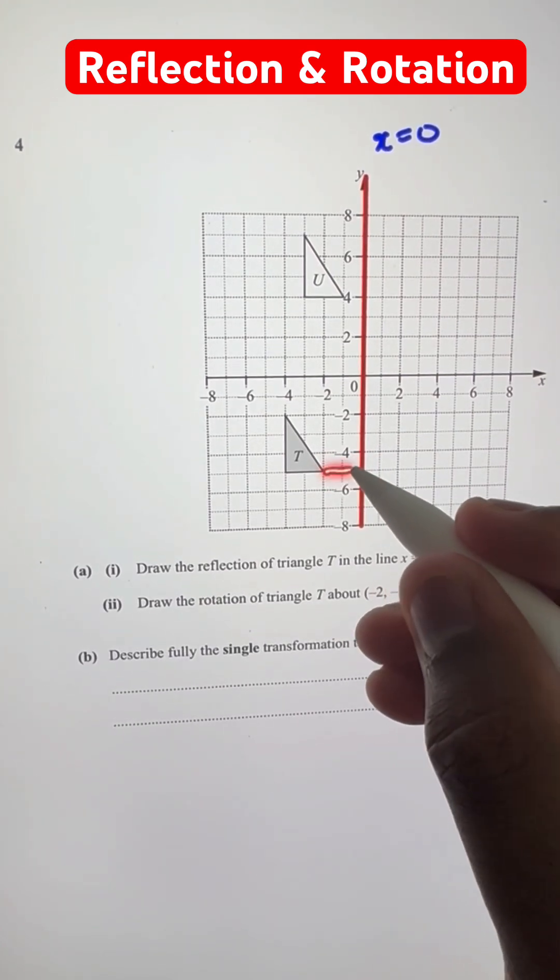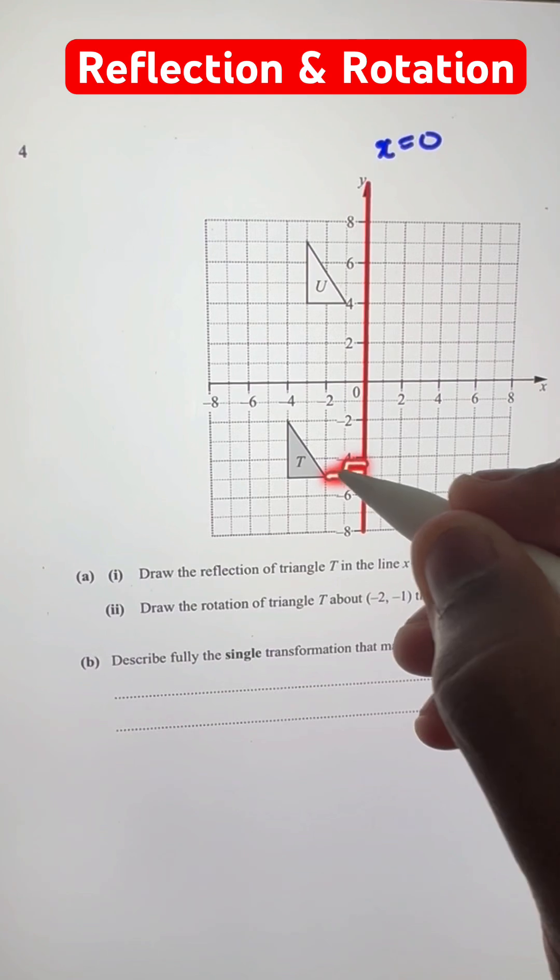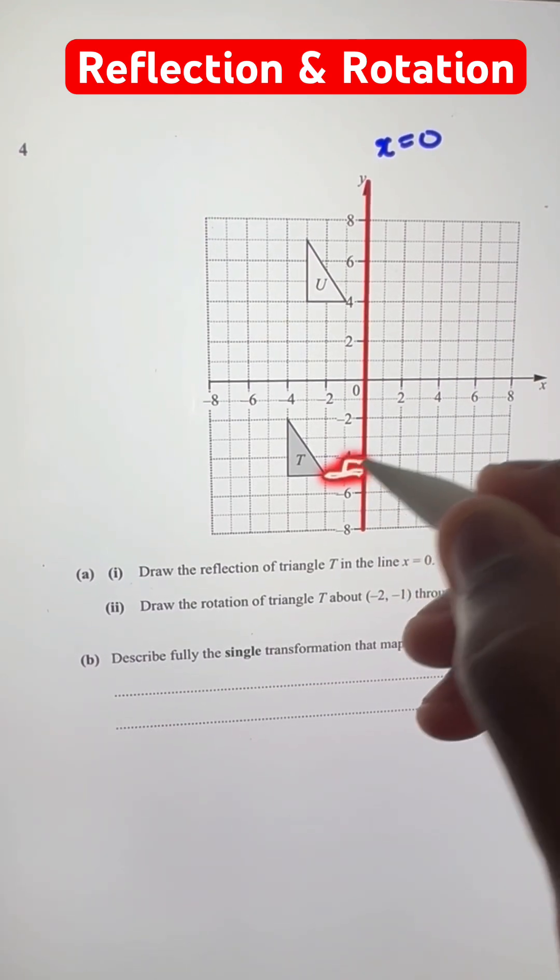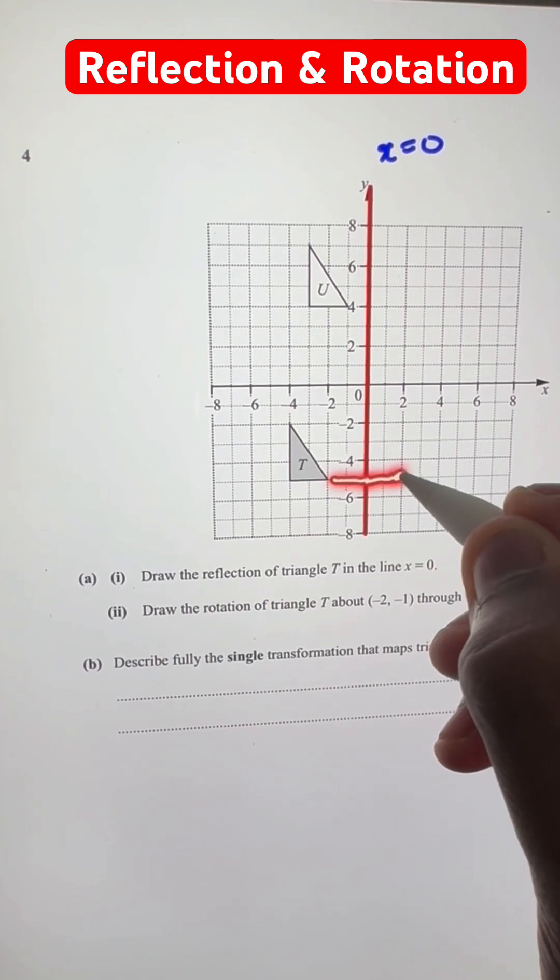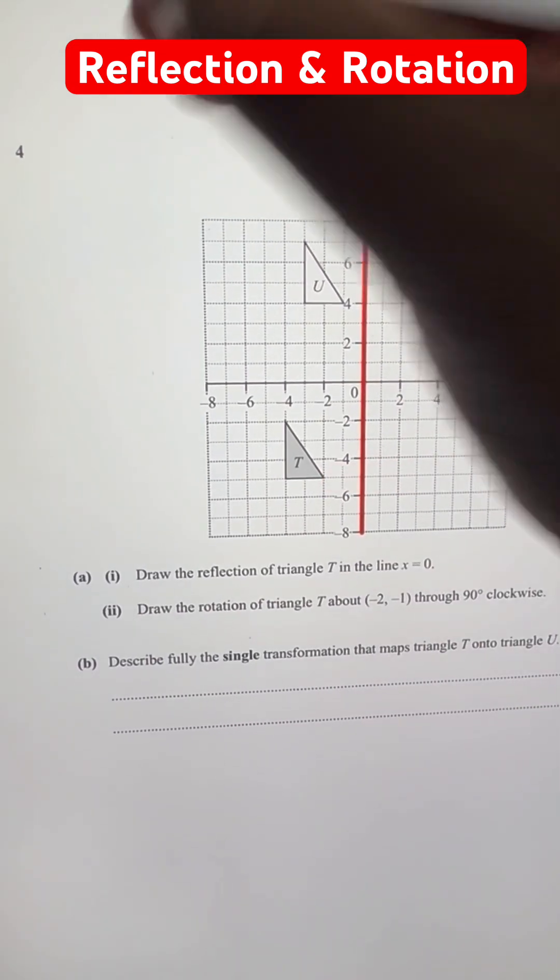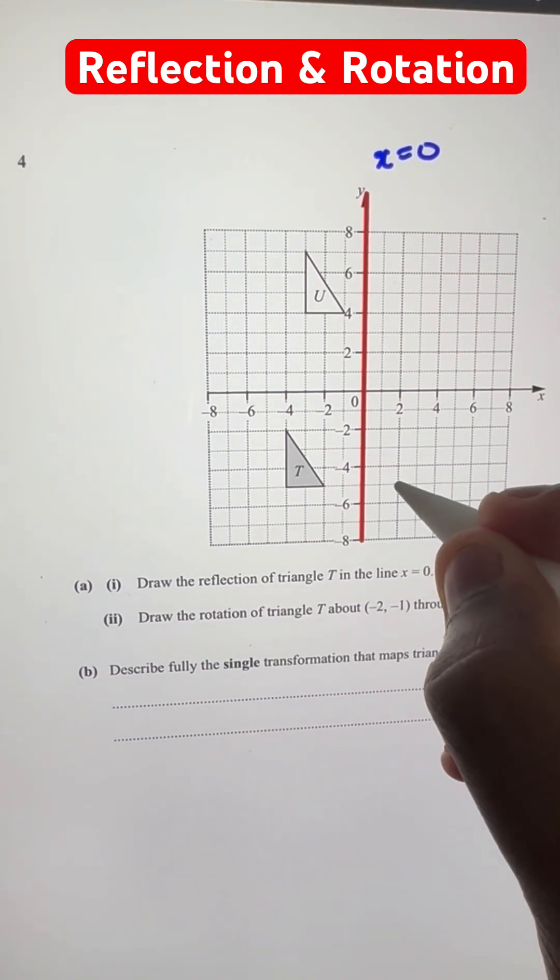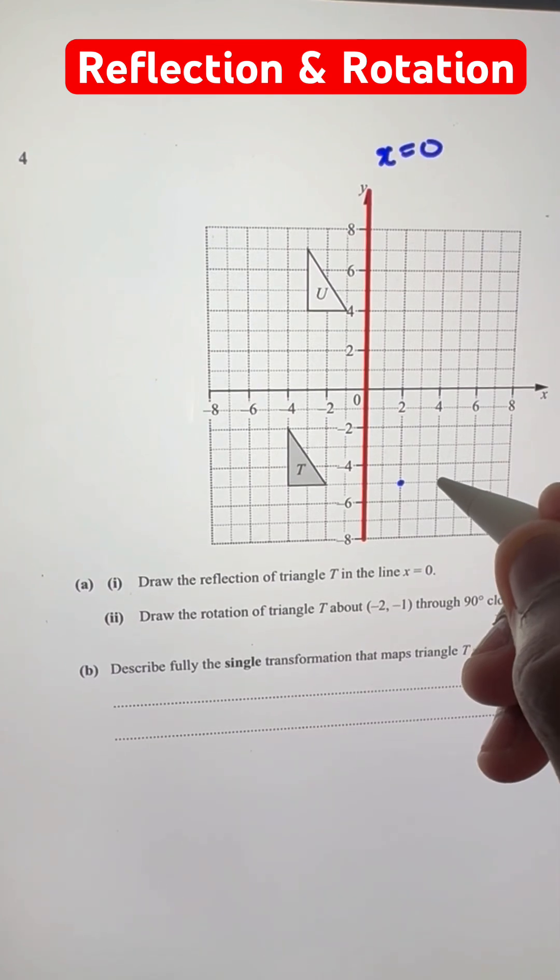which means at right angle to the line. So when you draw a line from here going at right angles, it's two units. Then we can just continue this line two more units and we'll get to the reflection point. So this is the corresponding point reflected.